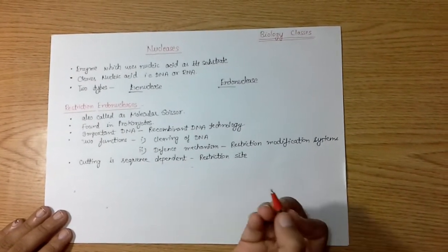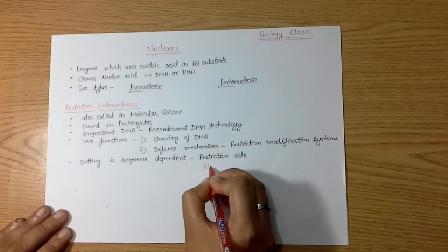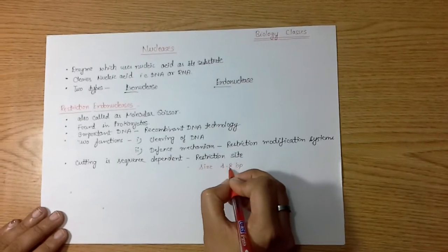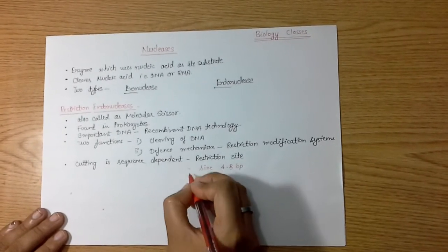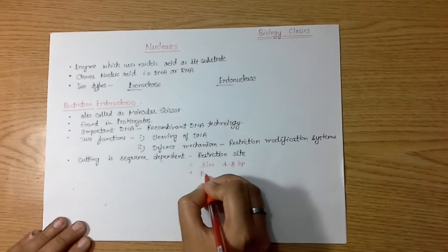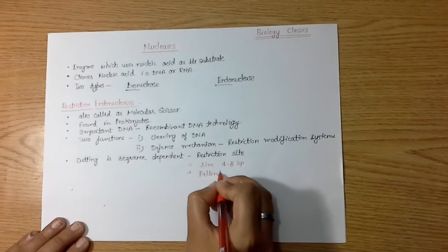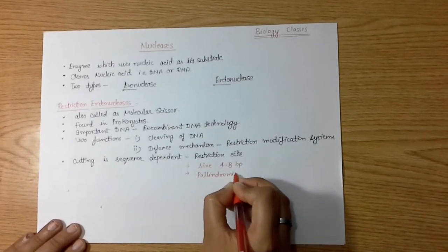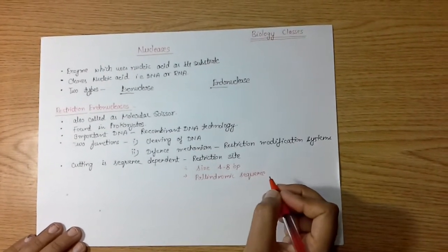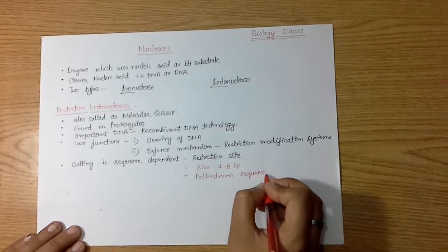General introduction of restriction site: restriction site is generally a small segment of DNA or RNA, may be the size of 4 to 8 base pairs. Next thing is it is palindromic in nature, so that the restriction enzyme can recognize the restriction site for cutting.